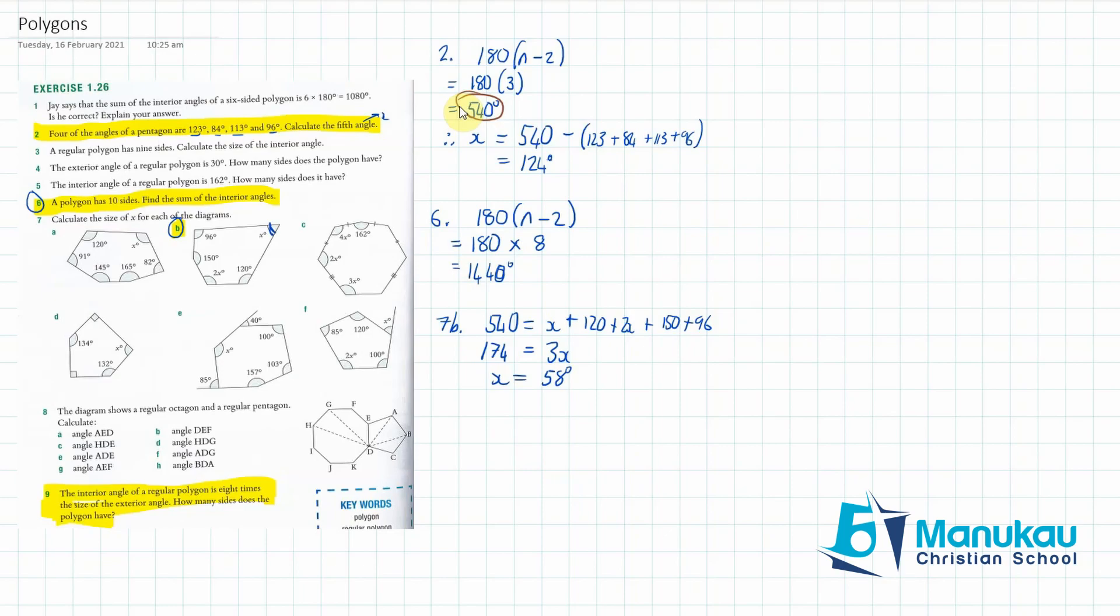The last one, number 9. So, we have an exterior angle of a regular polygon, which is 8 times the size of an exterior angle. Now, the key here that you need to realize is the interior plus exterior equals 180. That's the key. I think that would have been in your preparation. So, if the interior is 8 times the size of the exterior angle, let's say exterior equals x. Therefore, interior equals 8 times that, and we know that 8x plus x or x plus 8x equals 180.